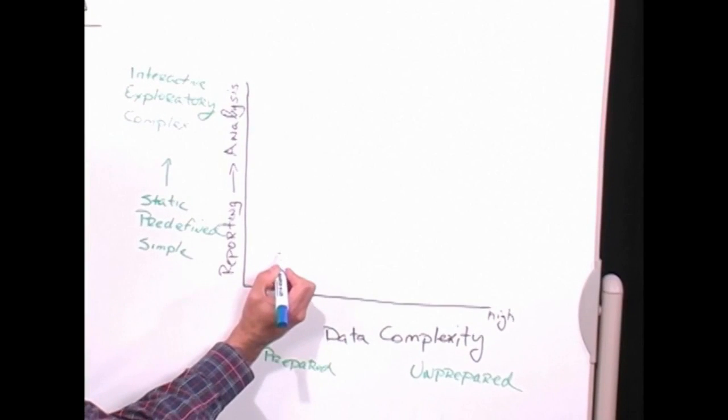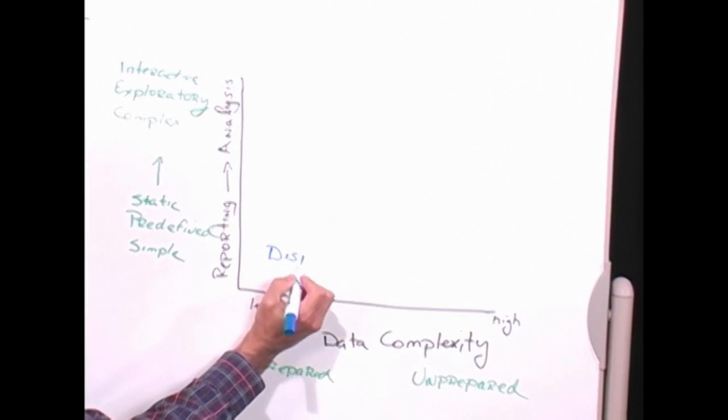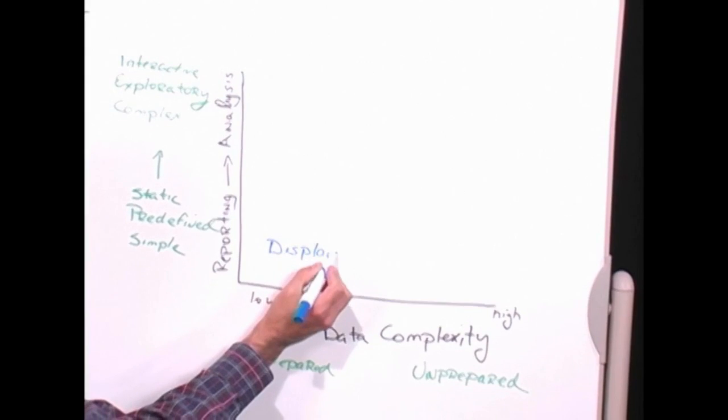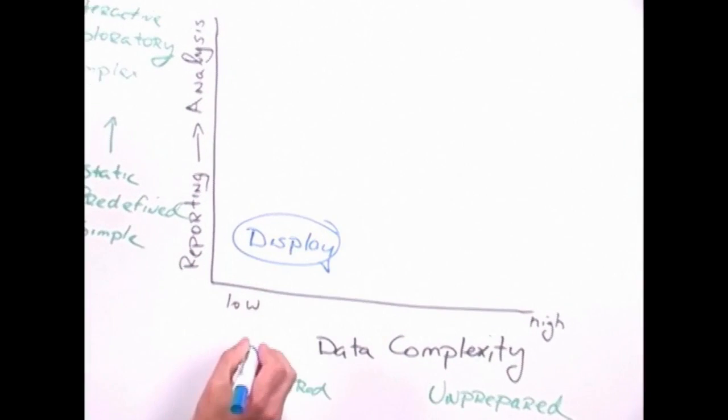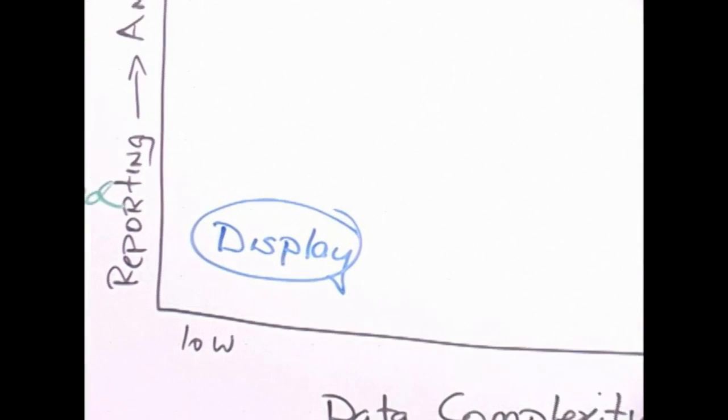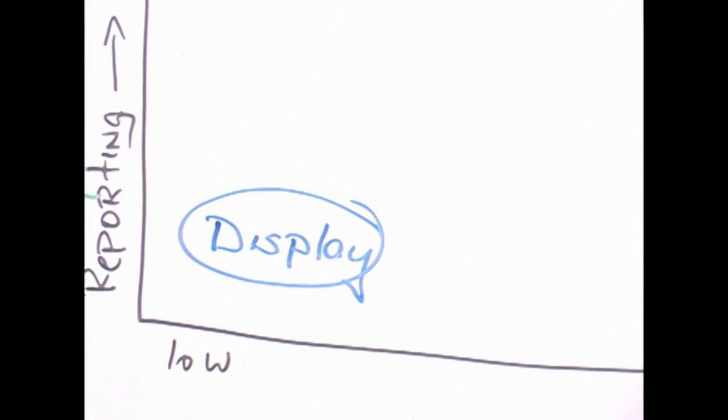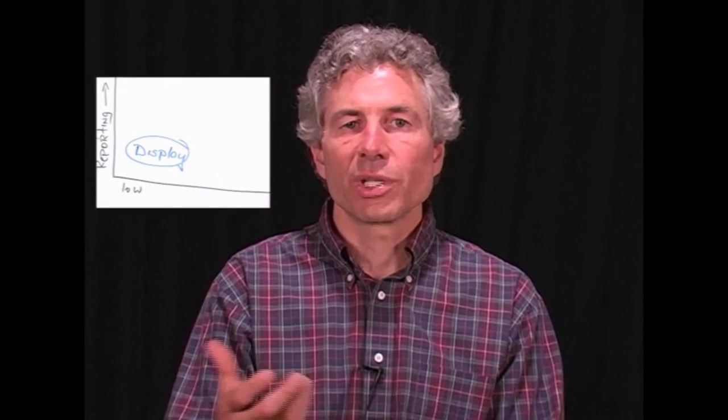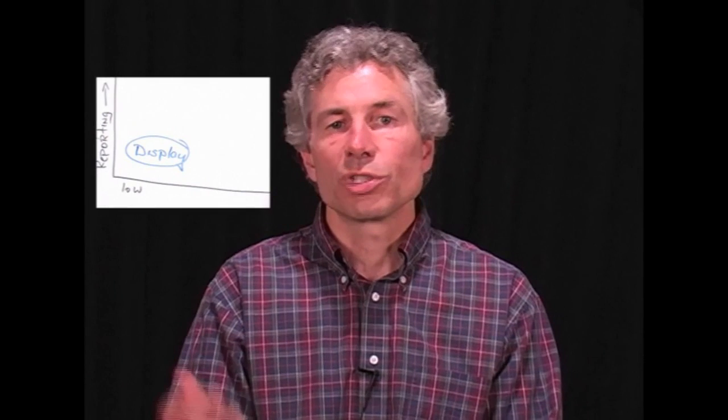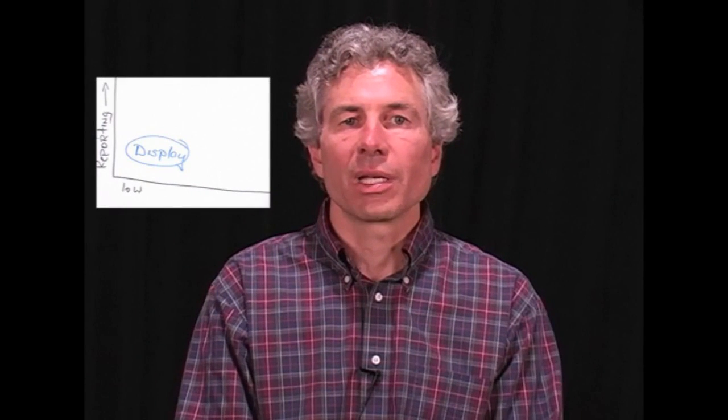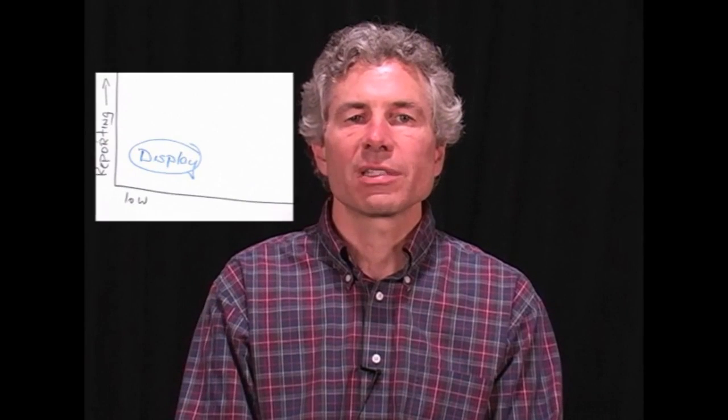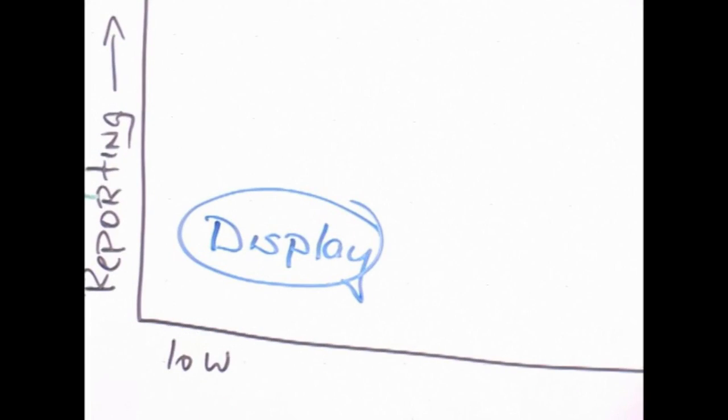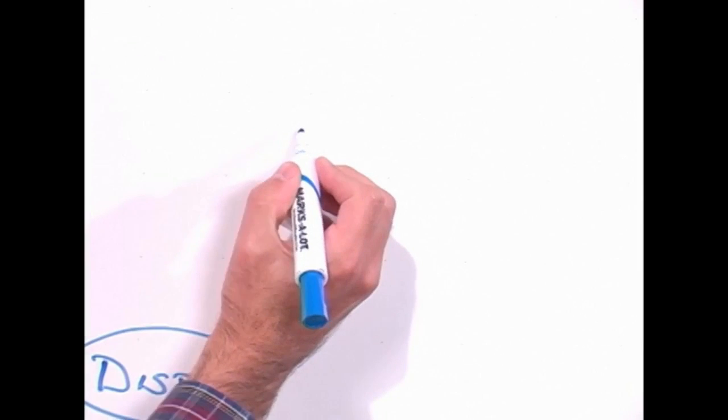So those are our two axes. Now we can start plotting categories of data visualization tools. The first category is what I would call display type visualization tools. And these are what I would say are very simple dashboards that provide one or two layers of data that do allow objects on the screen to synchronize with each other, update each other. So if you change one, the others on the screen are automatically updated as well. But simple dashboards, for the most part, with a highly visual interface that can be very appealing to users.